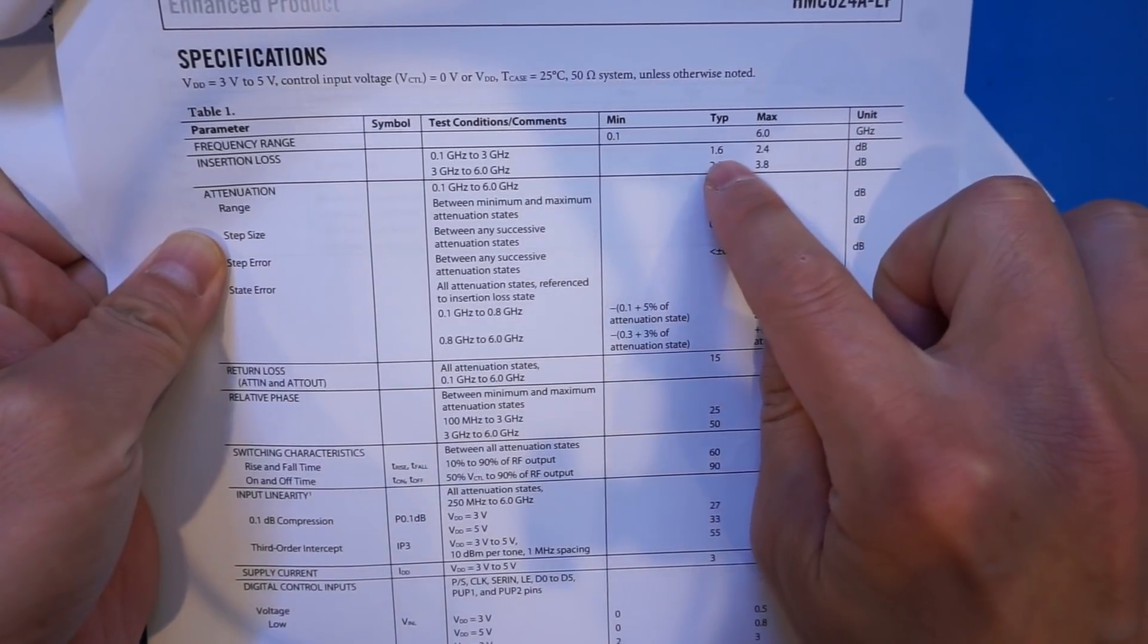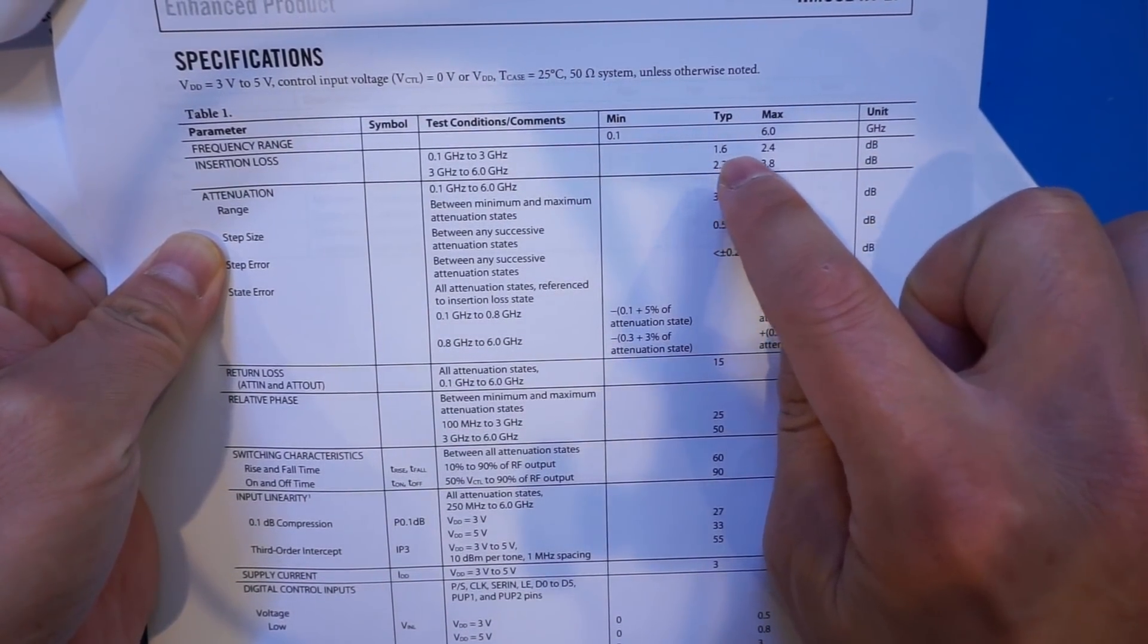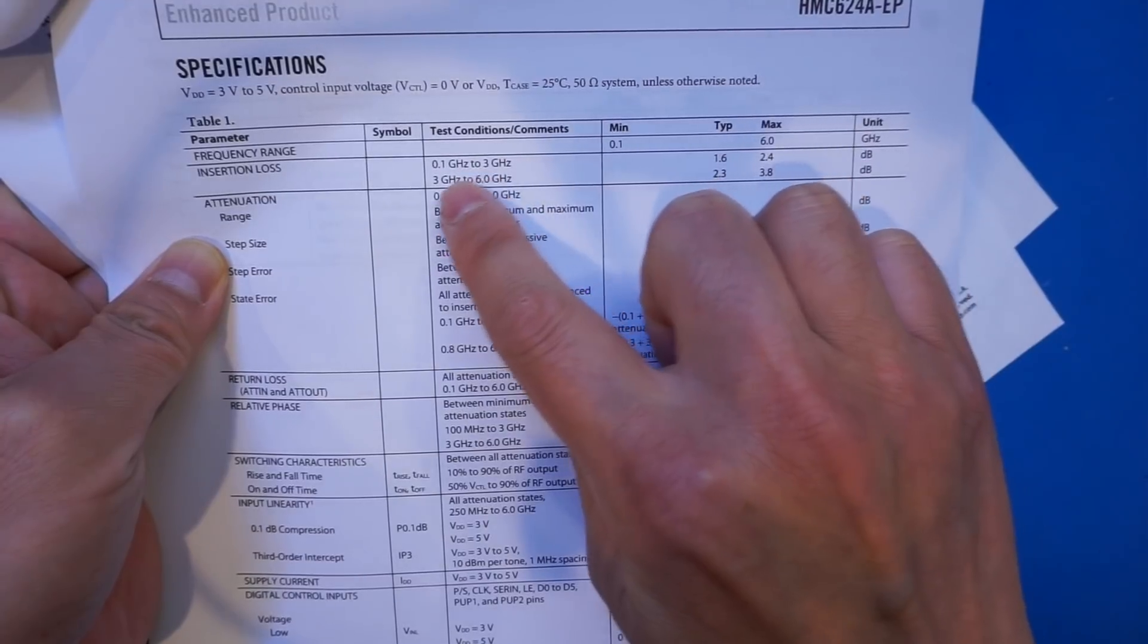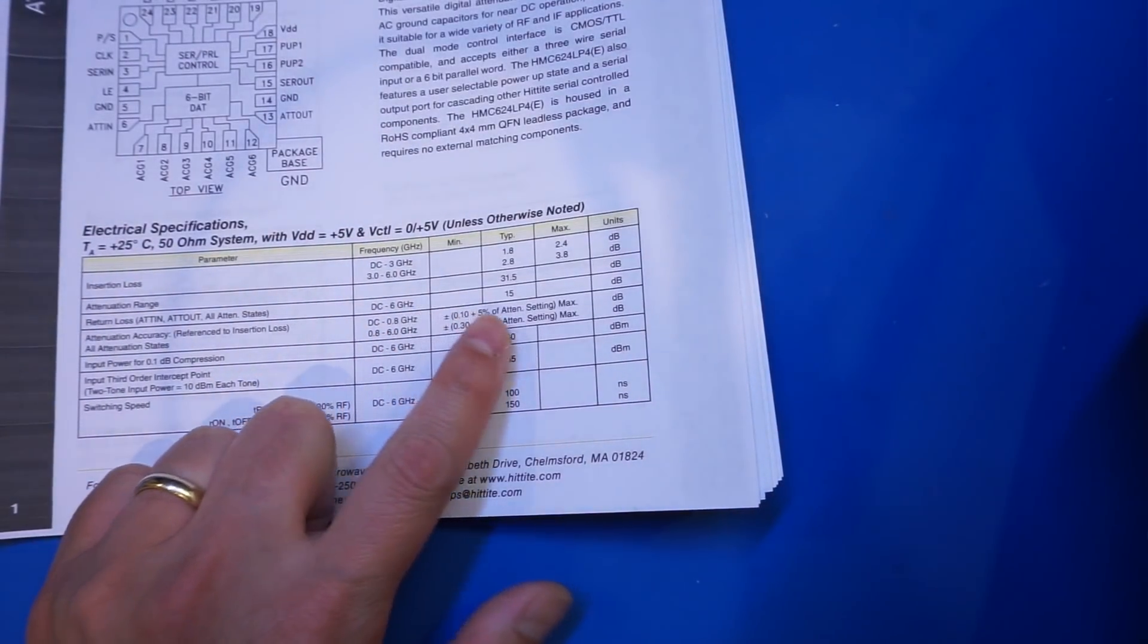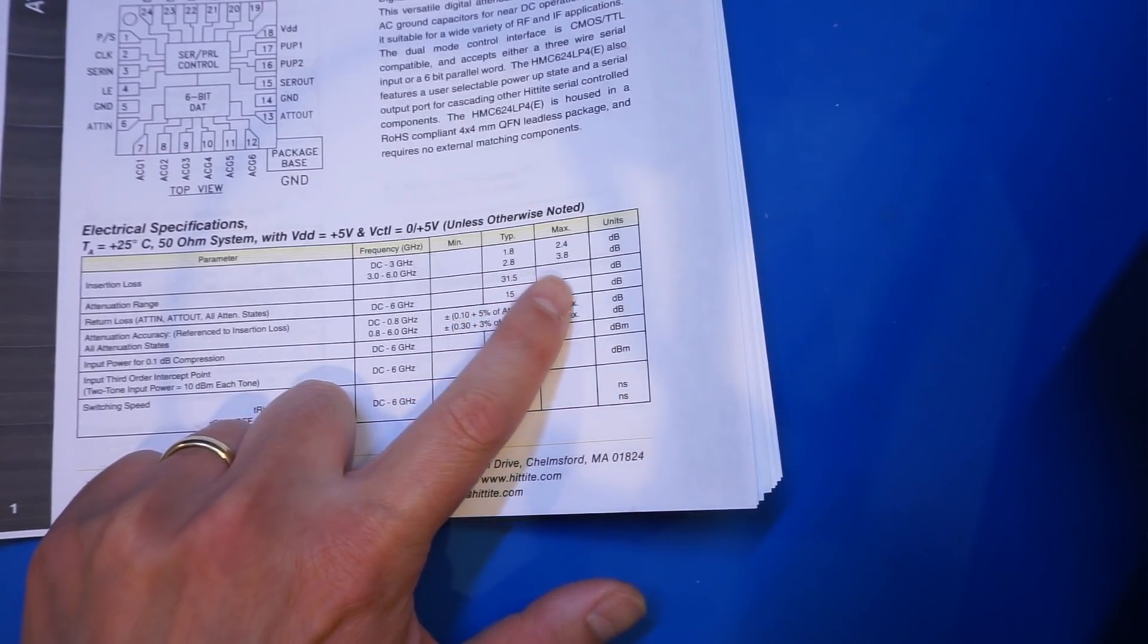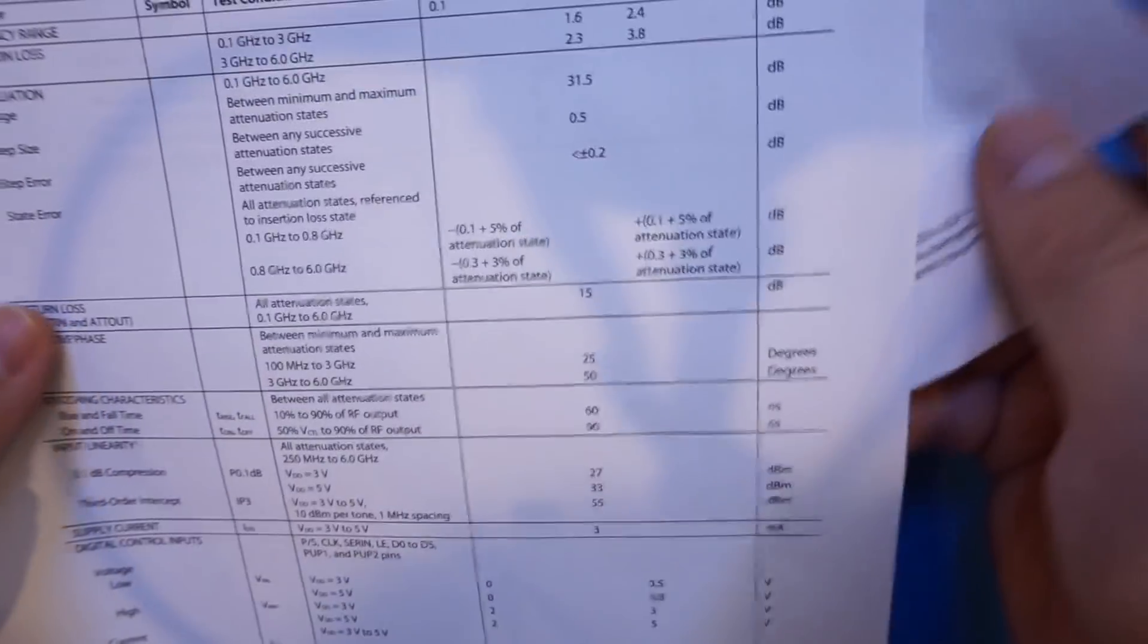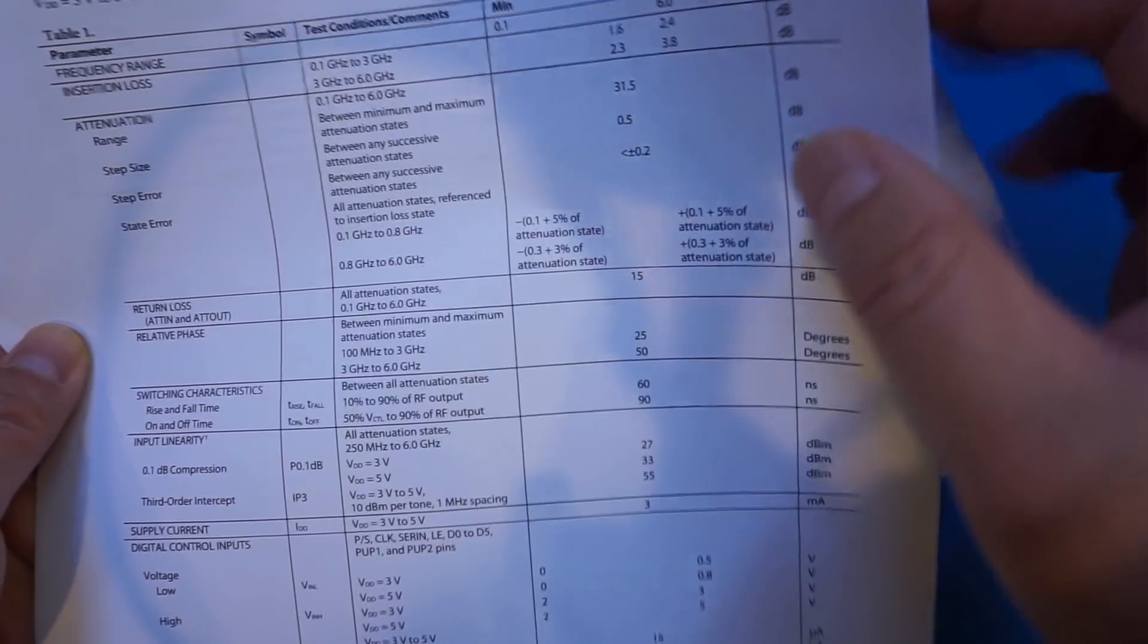But in terms of insertion loss, it has slightly better characteristics, not quite too much. You can see here, typical 1.6 decibels between the 0.1 to 3 gigahertz bandwidth, whereas here in the Hittite, we have a 1.8 typical. So it is ever so slightly better spec-wise. But nevertheless, these two parts are identical.